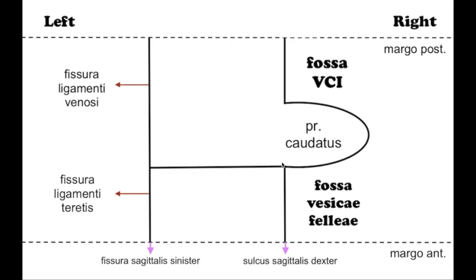A deep transverse groove connecting the posterior ends of the fossa for the umbilical vein and the fossa for the gallbladder is called the porta hepatis.